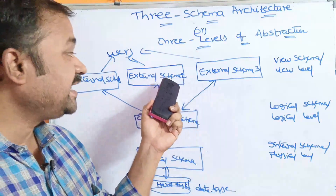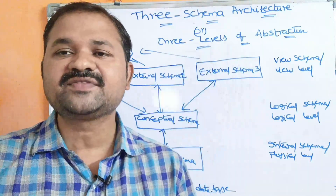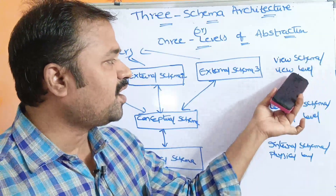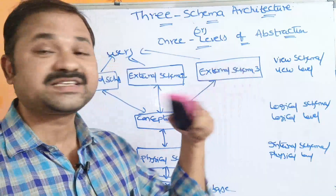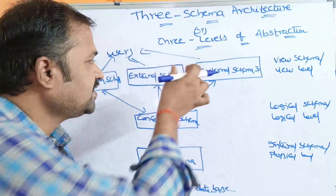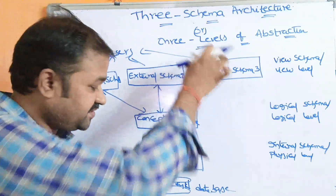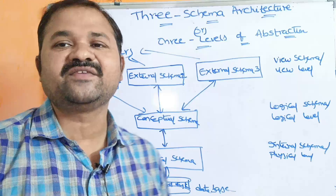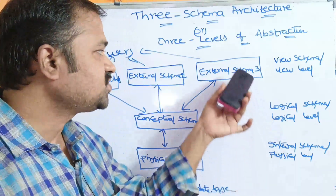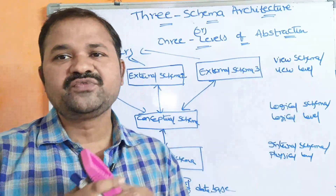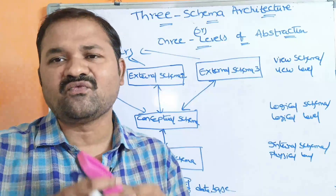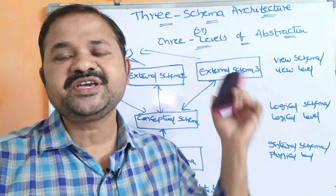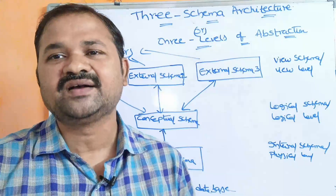The first one is external schema, also known as view schema, view level, or external level. This is the highest level of abstraction, whereas physical schema is the lowest level of abstraction. View means which information will be visible to the user, and we have different types of users.